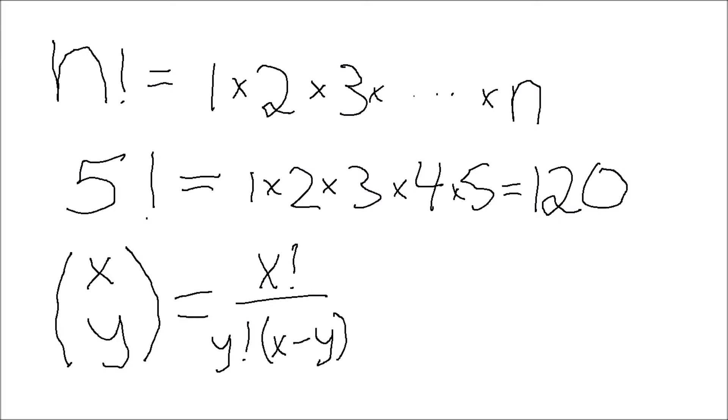And I explain why this is true in my probabilities in poker video. An example of this might be, what is the number of ways you can choose 5 cards out of 52? That is equal to 52 factorial divided by 5 factorial divided by 47 factorial, which equals 2,598,960.